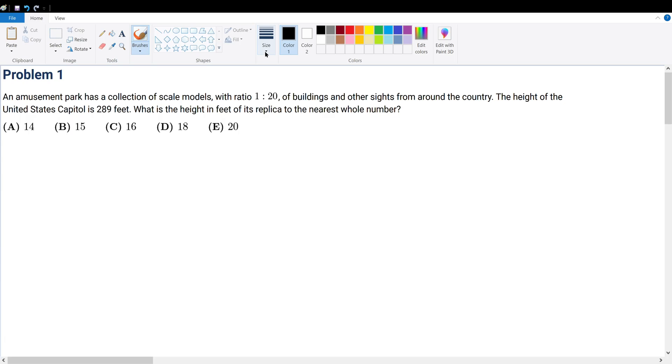Problem 1. An amusement park has a collection of scale models with ratios of 1 to 20 of buildings and other sites from around the country. So basically, the replicas in comparison to the actual heights are 1 to 20.